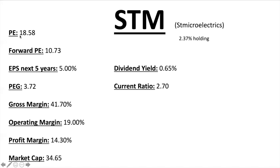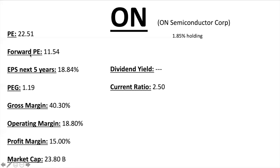ST Microelectronics, ticker STM, has a PE ratio of 18.58, Forward PE 10.73, EPS next five years 5% — quite low, not a lot of projected growth, though these analyst projections could change dramatically. For the math: 18.58 divided by 5 gives a PEG of 3.72 — quite high. Operating margins are under 50%, not ideal, and profit margin under 20-25% at 14.3% — not so good but not horrible. Market cap $34.65 billion, small dividend under 1%, current ratio 2.70.